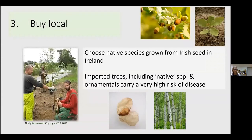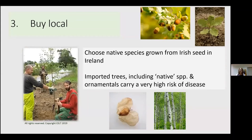The third way to help is to buy local — choose native species grown from Irish seed in Ireland. There are a number of small businesses around Clare and Limerick growing native species from seed. Imported trees, including native trees imported from elsewhere and ornamentals, carry a very high risk of disease — it's almost too much to be worth it. Those attractive potted olive trees sold as Christmas presents carry a risk of containing Xylella, so try to avoid buying them and find an alternative present.